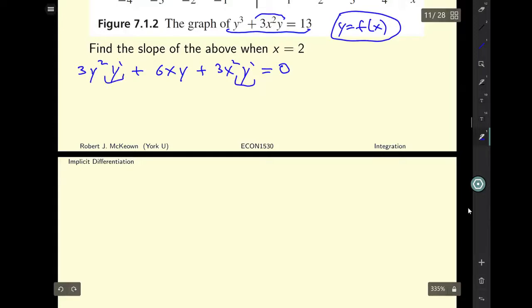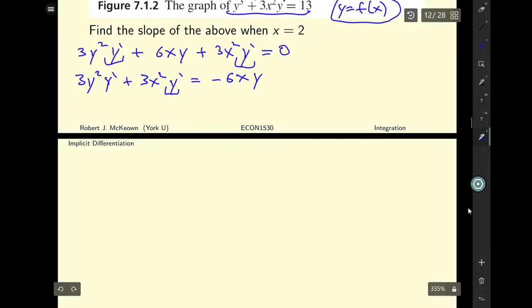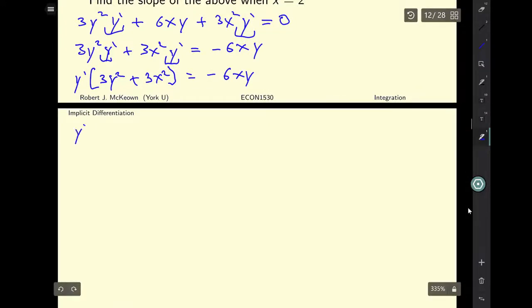Now I need to solve for my y primes. So I'll do this step by step rather slowly. First, I could just keep all my y primes on one side of the expression and move over the terms that do not have a y prime over the right-hand side. Then I can factor out my y primes. So I'm going to have y prime times 3y squared plus 3x squared is equal to negative 6xy. So I haven't done anything other than factor out the y prime. Now I can divide both sides of the expression by this thing that no longer has a y prime inside it.